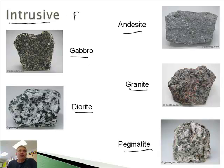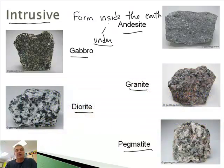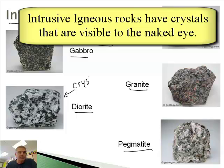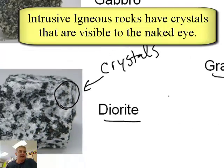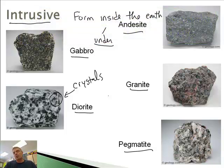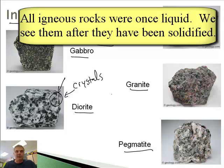Intrusive rocks form inside the earth — or more accurately, underneath the surface, not on top. If you look carefully at these rocks, you'll notice that they have crystals. If you zoom in, you can see different crystals, like in the diorite for example. The rock was once liquid or molten, and as it cools it forms the rock. We're looking at them after they have cooled — they were at one point liquid rocks.